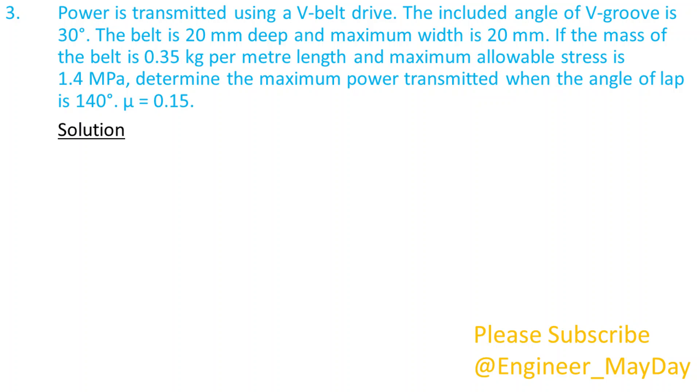Solution. Given: beta equals 15 degrees, thickness T equals 0.02 meters, width W equals 0.02 meters.